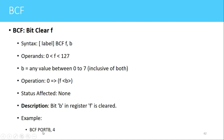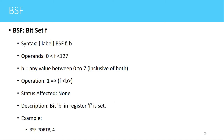An example of this instruction is BCF PORTB comma 4. The meaning of this instruction is that in the file register PORTB, bit number 4 will be cleared starting from 0, and the other bits will remain as they are. This instruction can be used to clear an individual bit from any file register.